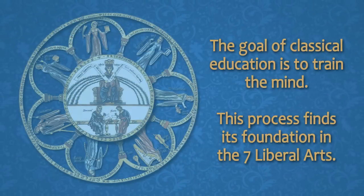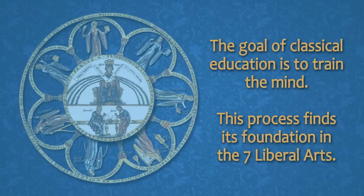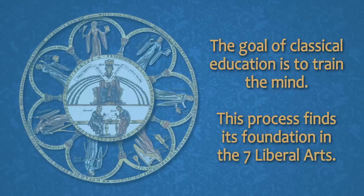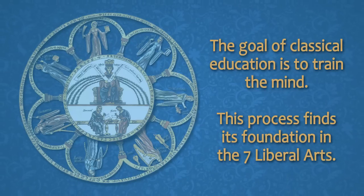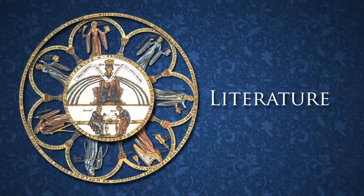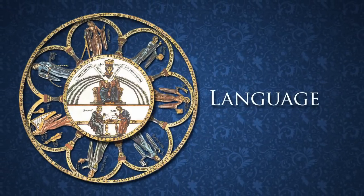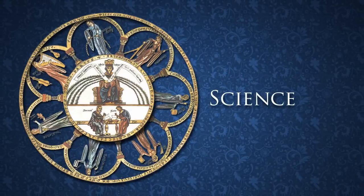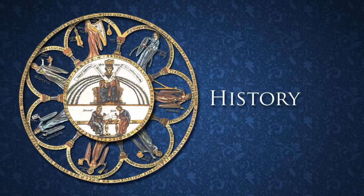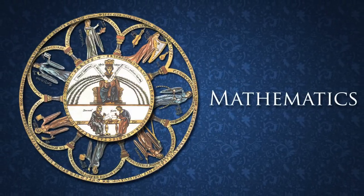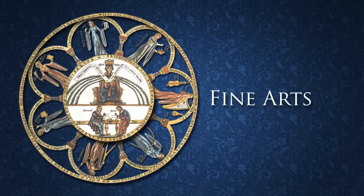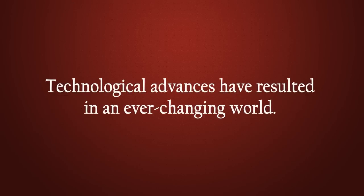The goal of classical education is to train the mind, and this process finds its foundation in the seven liberal arts: Literature, Philosophy, Language, Science, History, Mathematics, and Fine Arts. In a fast-paced world that's changing rapidly, ironically, classical education is more relevant today than it ever has been before.